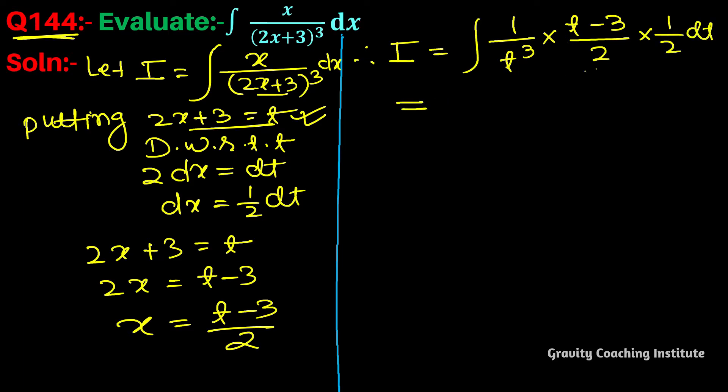This equals... taking the constant outside the integration, we get (1/4) times the integral of (t-3)/t³.